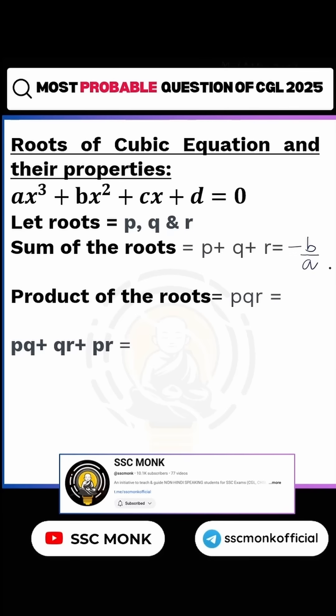Minus b by a. What is b? Coefficient of x². What is a? Coefficient of x³. Now what will be the product of all the roots? p×q×r = -d/a. What is d? The constant. What is a? Coefficient of x³.